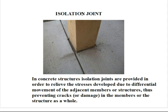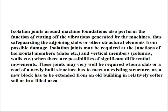Number 3: Isolation Joints. In concrete structures, isolation joints are provided in order to relieve the stresses developed due to differential movement of the adjacent members or structures, thus preventing cracks or damage in the members or the structure as a whole. Isolation joints around machine foundations also perform the function of cutting off the vibrations generated by the machines, thus safeguarding the adjoining slabs or other structural elements from possible damage.